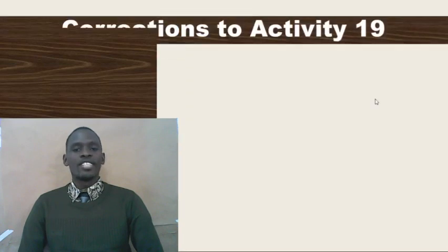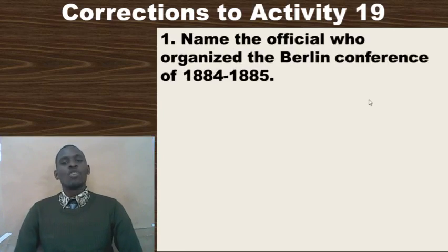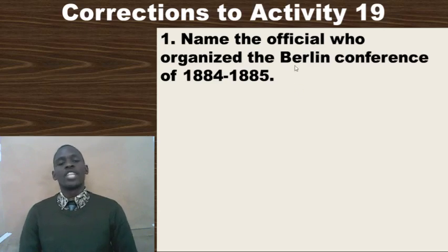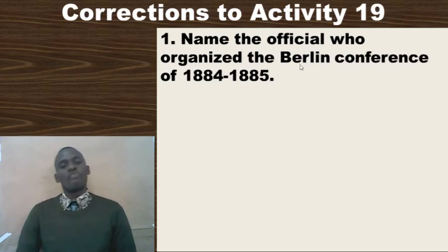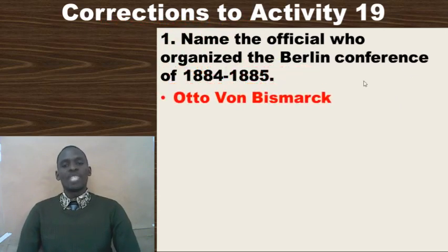Question one: Name the official who organized the Berlin Conference of 1884 to 85. I guess you all passed that — the answer is none other than Chancellor Otto von Bismarck.